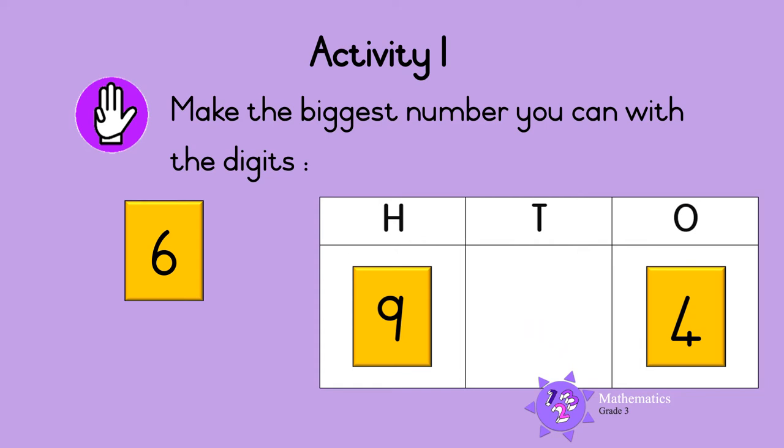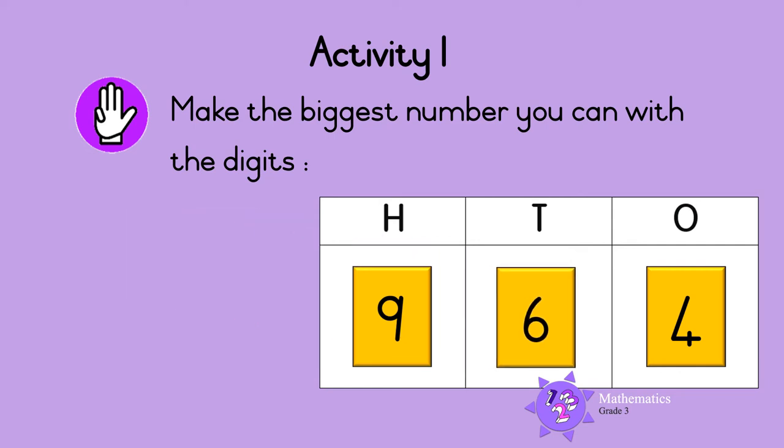Write the remaining digit in the tens column, so six goes in the tens column. So the biggest number we can make with the digits four, six, and nine is nine hundred and sixty-four.